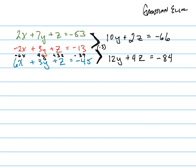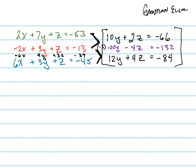Now I need to eliminate one of the remaining variables. I'm going to multiply the first equation by negative 2, giving me negative 20y minus 4z equals positive 132. When I add them straight down I eliminate the z's, and I get negative 8y.